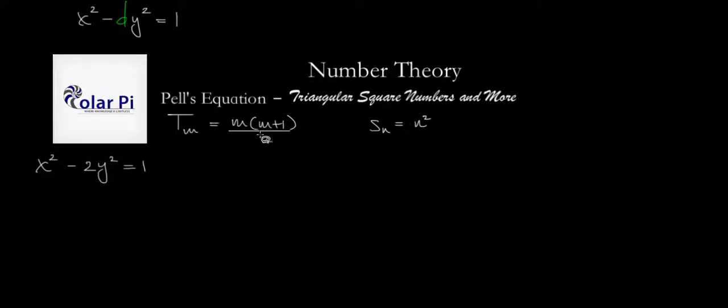Look at what would happen if we tried to figure out when T_m will equal S_n. T_m equals S_n requires that we write m times m plus 1 over 2 is equal to n squared, which we can get in slightly friendlier form if we write m squared plus m equals 2n squared.